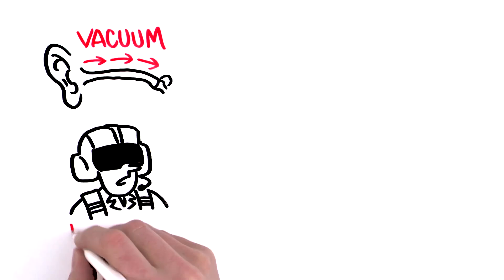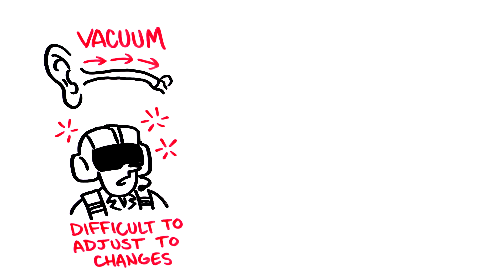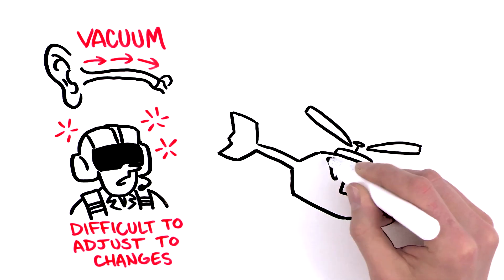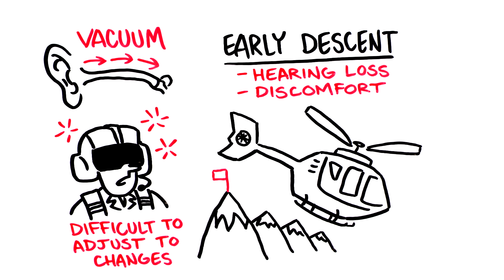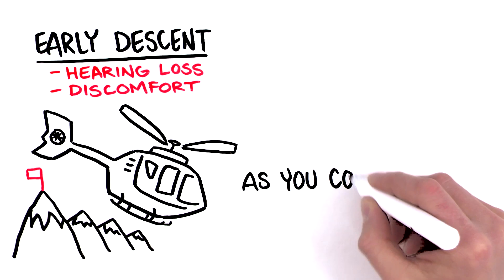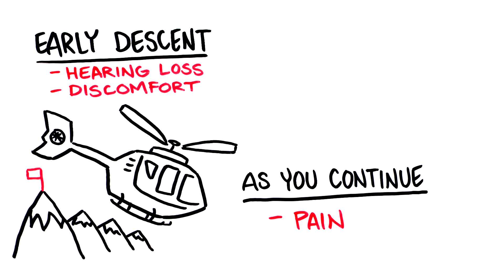In the worst case, you won't be able to adjust at all. Early in the descent, this condition can make itself felt as mild hearing loss and slight discomfort. As you continue, the pain will get worse. The possibility that your eardrum might rupture increases.